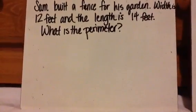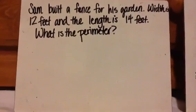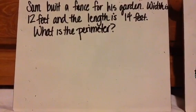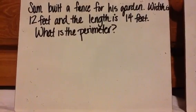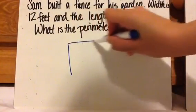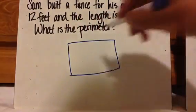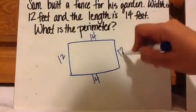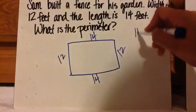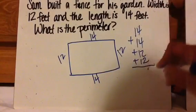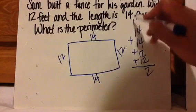Okay, I want you to see if you can solve this problem. There is no picture. You need to draw the picture and solve. Sam built a fence for his garden. Width is 12 feet and the length is 14 feet. What is the perimeter? So according to this, it sounds like it's almost like a square because 12 and 14 are so close. So 14 for the length, 12 for the width. So I'm going to add up all my sides.